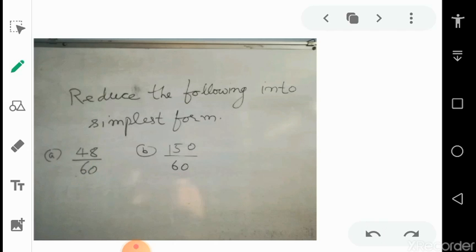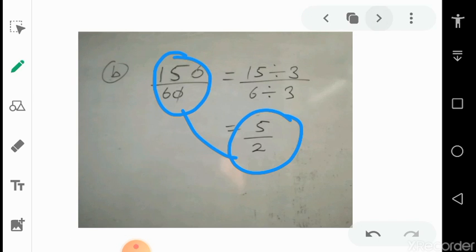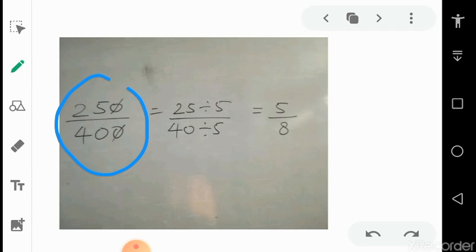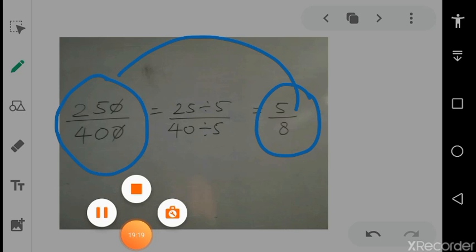Now reduce the following into simplest form. If zeros are present, just cancel the zeros — the numbers will be converted into smaller values. For 250 upon 400, cut the zeros to get 25 upon 40. Knowing your multiplication tables will help you here. Divide both by 5 and we get 5 upon 8. This is the simplest form of the given fraction.